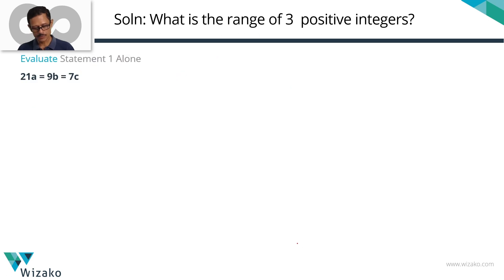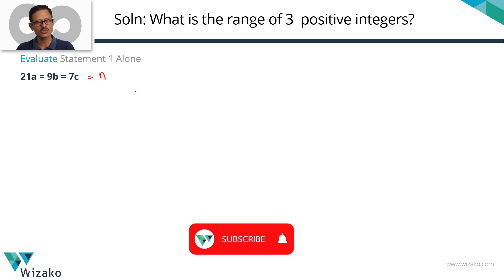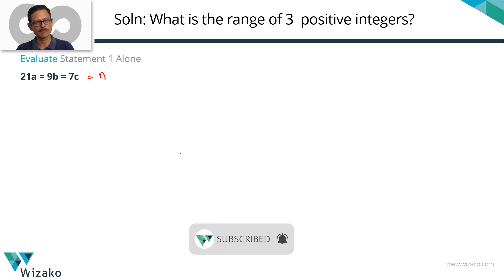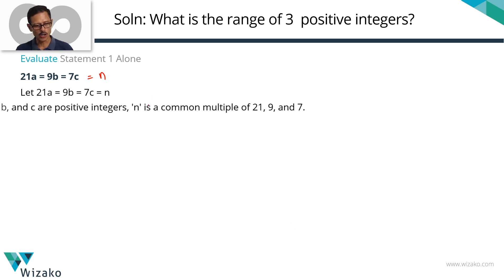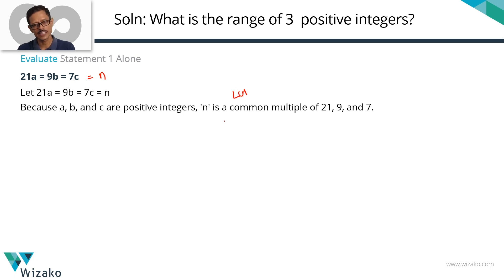Let's evaluate statement one. Statement one states that 21A equals 9B equals 7C. Since A, B, and C are positive integers, 21 times a positive integer will be a positive integer. Let's call all of these equal to N. It's evident that N is a multiple of 21, a multiple of 9, and also a multiple of 7. So N is a common multiple of 21, 9, and 7. The smallest such common multiple is the LCM. Let's compute the LCM of these three numbers.